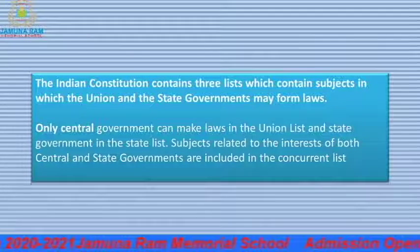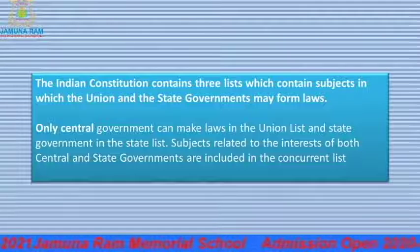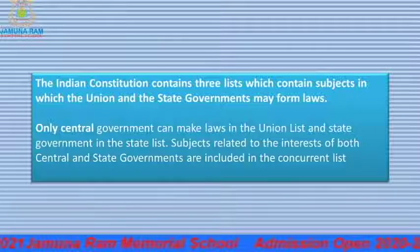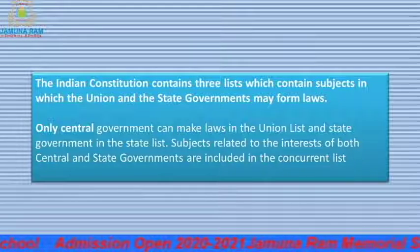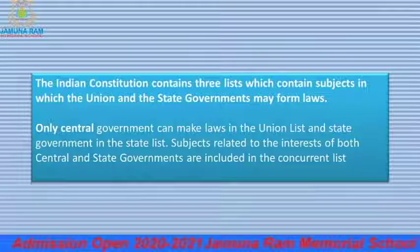Only the central government can make laws in the Union List. The state government governs through its own State List, which has rules specific to the states. Both central and state governments are included in the Concurrent List, where both can make laws. So the three lists — Union List, State List, and Concurrent List — define the legislative powers of each level of government.